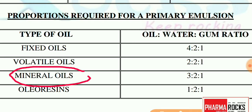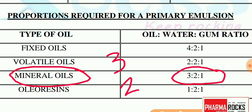Next is mineral oil. The main mineral oil emulsion is liquid paraffin emulsion, which is mainly used as a laxative and purgative in the treatment of constipation. For mineral oil, the oil:water:gum ratio is 3:2:1. That means if you take one gram of gum, you take double — two grams of water — and three times the gum quantity for oil.